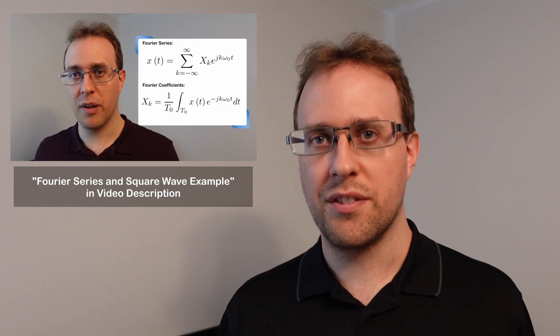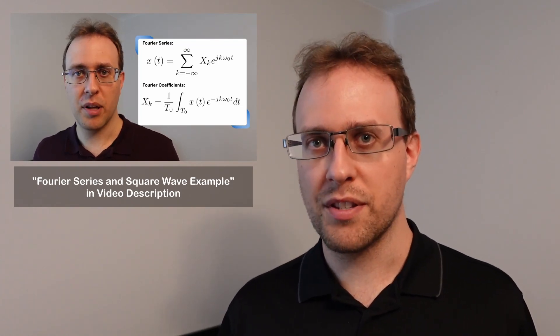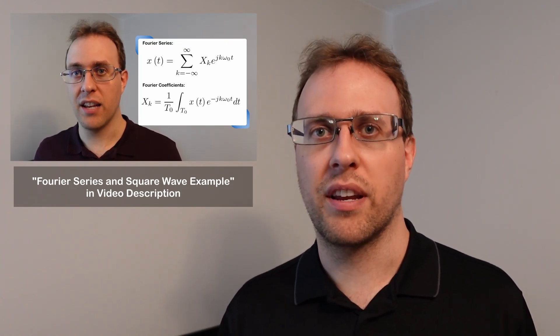In our last video we introduced the Fourier series, which gives us the spectrum for these kinds of more complex periodic signals. In this video we're going to update our ideas about system output, then as an example we'll look at the low-pass filter output when the input is the periodic square wave.